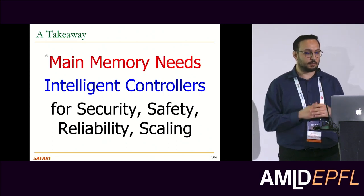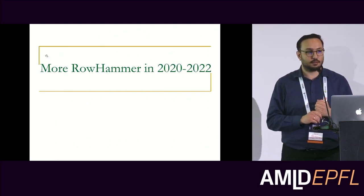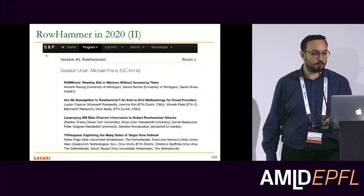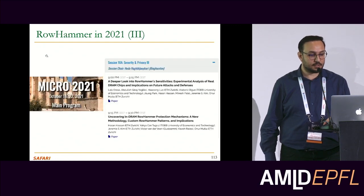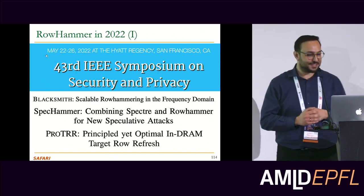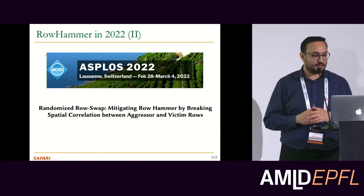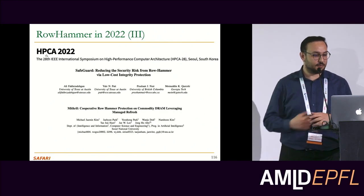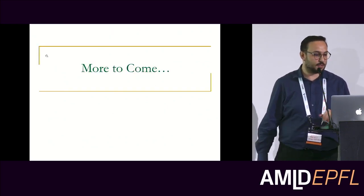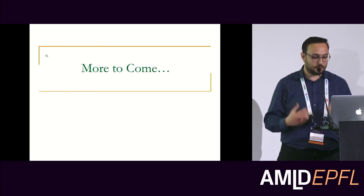The main takeaway after all these works is that main memory needs intelligent controls for security, safety, reliability, and scaling. Other groups seem to agree — we keep seeing a lot of papers in recent top conferences, including top security venues and architecture venues. Two are from Professor Azizi's group in the upcoming Security and Privacy conference, a new mitigation mechanism was just published a few weeks ago, and we also have two new defense mechanisms from other groups coming up in upcoming HPCA. There are definitely more to come.